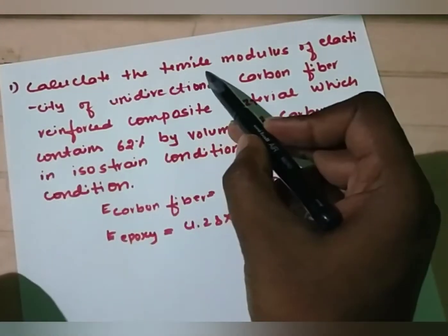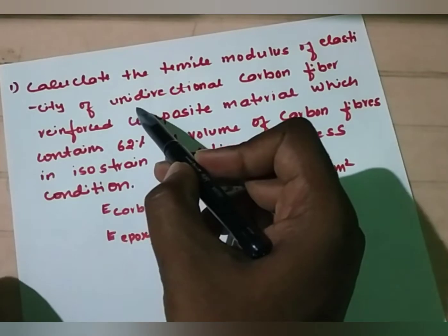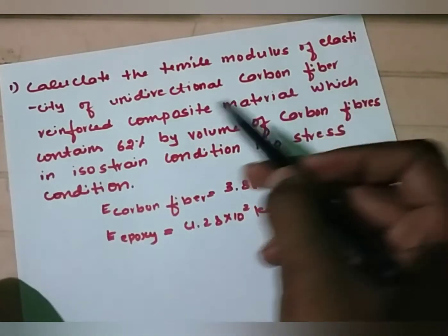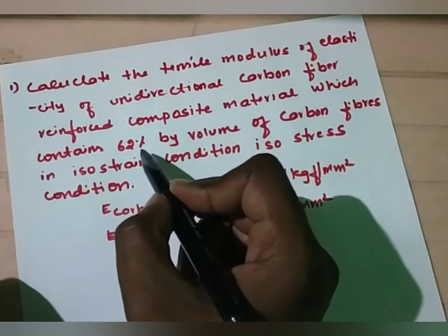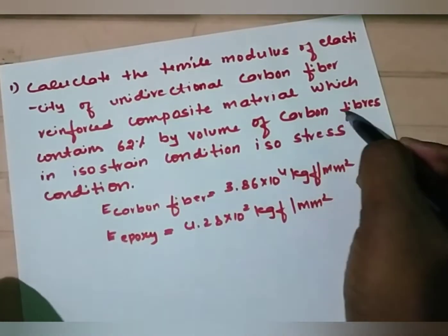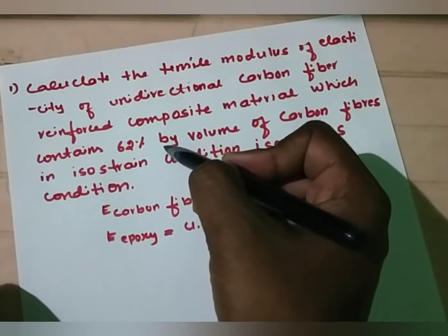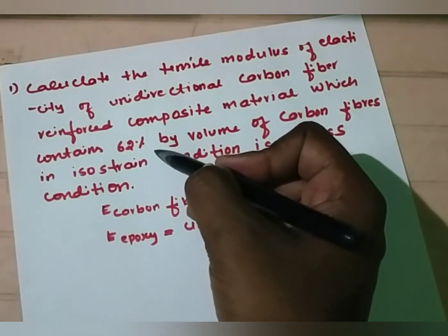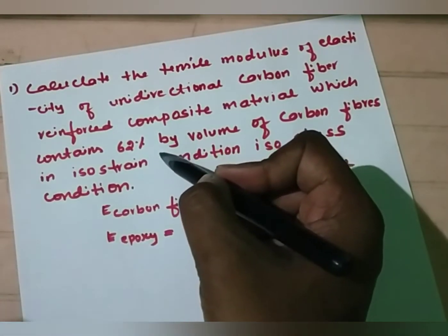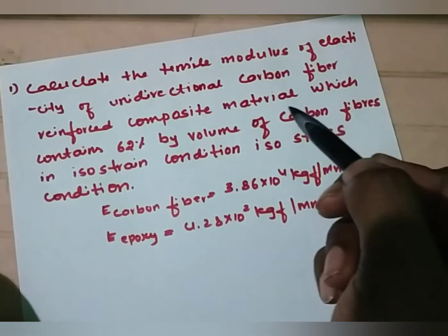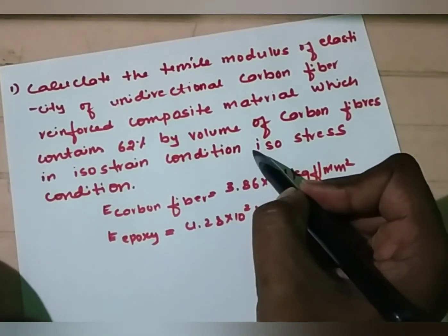We have to calculate the tensile modulus of elasticity of a unidirectional carbon fiber reinforced composite material which contains 62% by volume of carbon fiber — that is, volume of fiber is 62% — and the remaining 38% will be the matrix, in both isostrain condition and isostress condition.